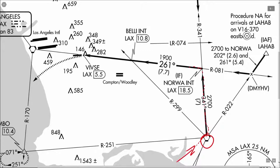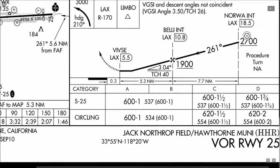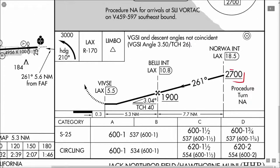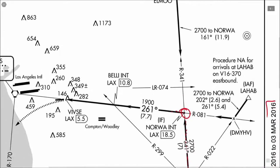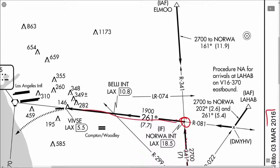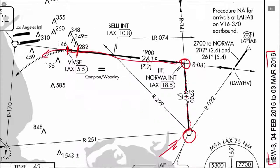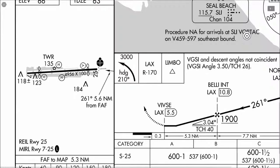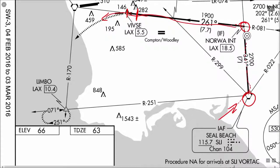At NORWA, we intercepted it at or above 2700 on the first approach and flew that one all the way down. Minimums were here — we flew it probably to about here, and then at that point we declared we could see the field. Then we lost the field, so we had to execute the missed approach, which was a climbing left-hand turn to heading 210, climbing all the way up to 3000 to intercept the 170 radial. We did one kind of shaky hold at Limbo, and then we came back in.